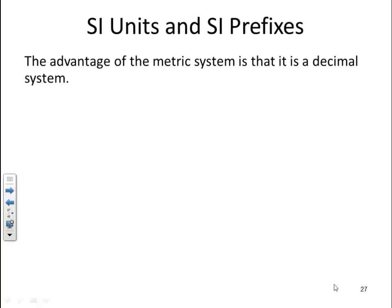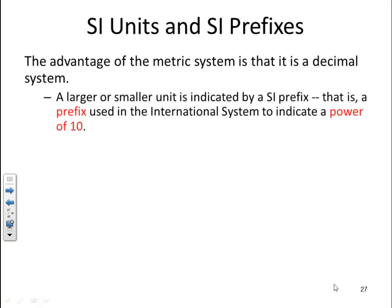The advantage of the metric system is that it is a decimal system. A larger or smaller unit is indicated by an SI prefix. That is, a prefix used in the international system to indicate the power of 10. For instance, milliliters. You have the SI unit of liters, and you have a prefix, M for the milli.